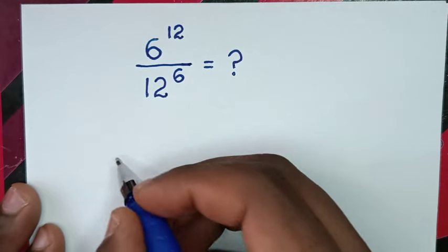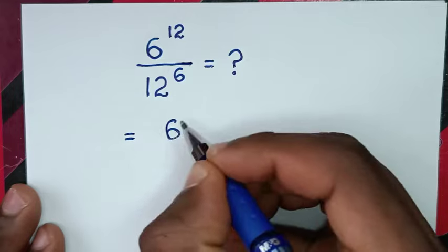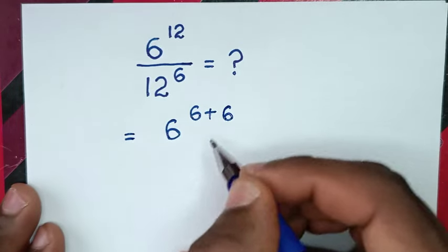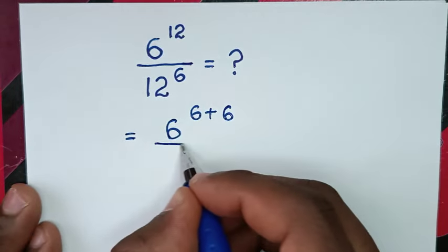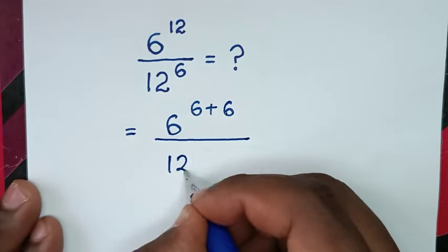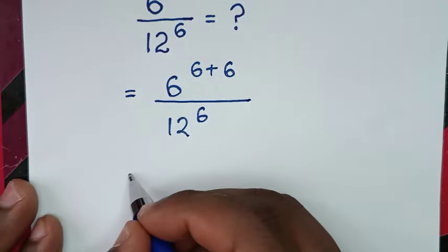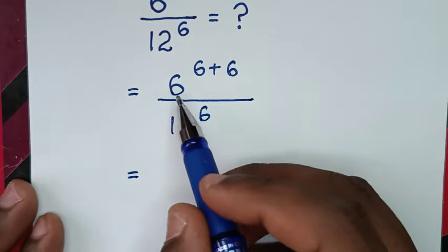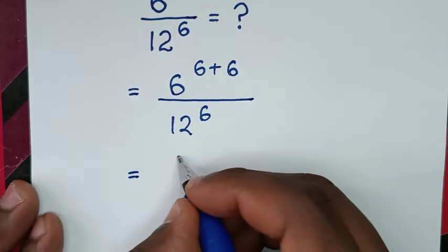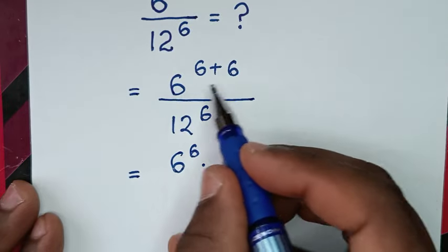This will be equal to: 6 power of 12 is the same as 6 power of (6 + 6), over 12 power of 6. Then it will be equal to 6 power of (6 + 6), which is the same as 6 power of 6 times 6 power of 6.